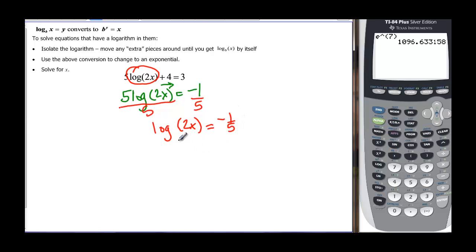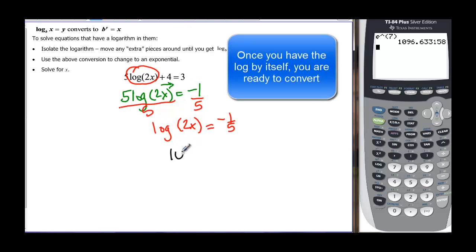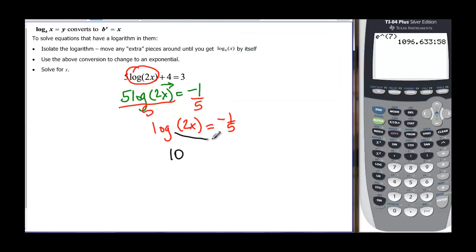Now we have log of 2x is equal to negative one fifth, and we can convert it, so remember this is an assumed ten when it's just log. And then we hop across the pond to get the exponent of negative one fifth, equal to hop back across the pond, equal to 2x, and if we divide everything by two we can finally get x by itself.